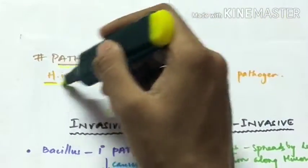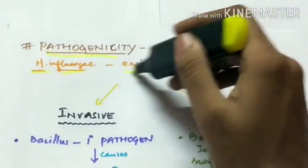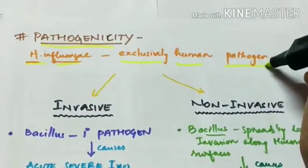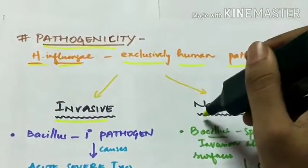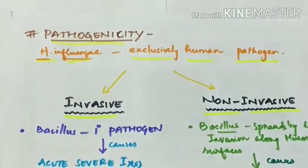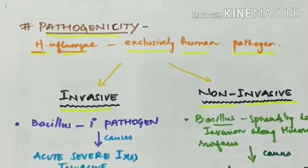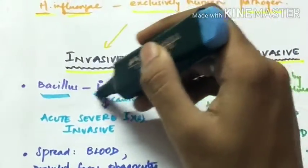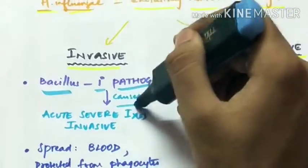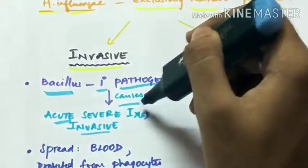Pathogenicity. Haemophilus influenzae is exclusively a human pathogen. It produces two types of infections by invasive or by non-invasive. In invasive pathogenicity, the bacillus is itself the primary pathogen which causes acute invasive infections.